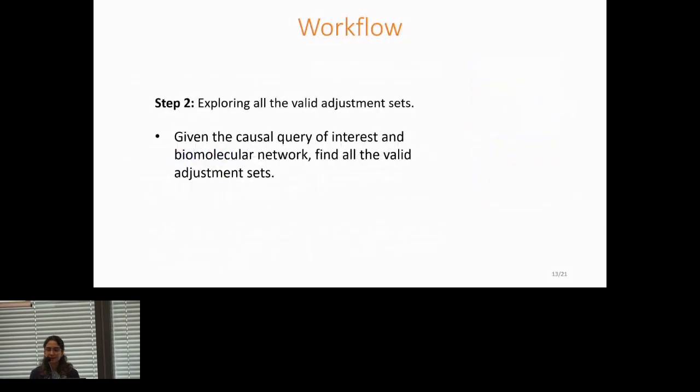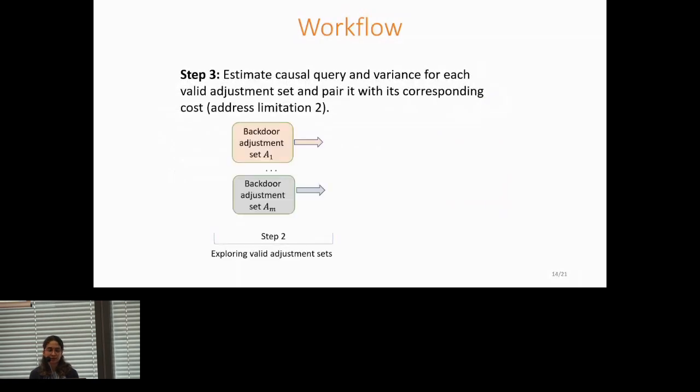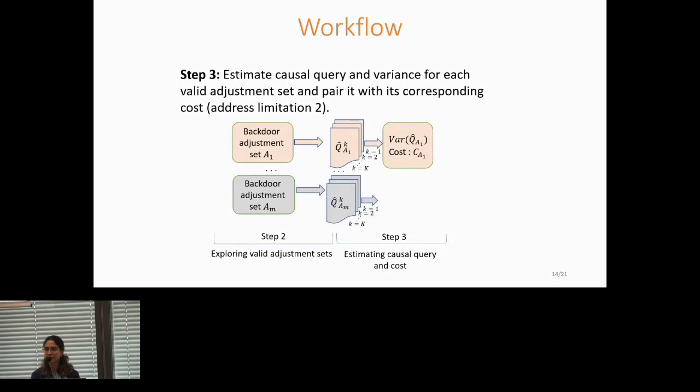Now the second step is exploring all the valid adjustment sets. There are methods that take causal query of interest and biomolecular network as input, and they will output all the valid adjustment sets for us. And the third and final step is that we will take the adjustment sets generated in step two, and we will estimate the causal query and pair it with its corresponding cost. So for each adjustment set, we are going to estimate the query over each synthetic data, which were k of them, so we will have k estimates. And then we'll take the variance and pair it with its corresponding cost. And we're going to do that for each and every valid adjustment set. And once we have the list, we will just rank it based on variance and have the output that we saw previously.